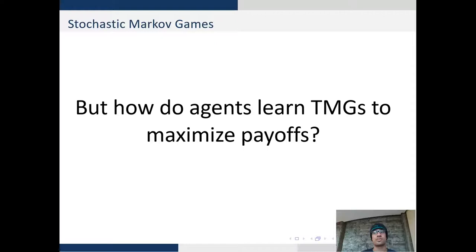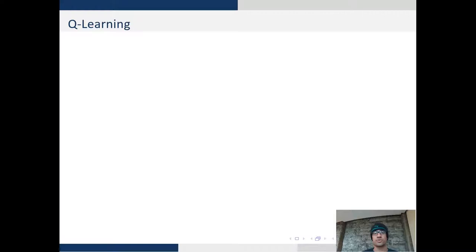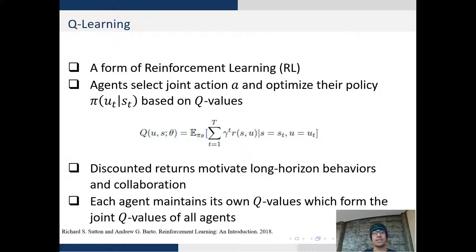But the question arises, how can agents learn TMGs to maximize their payoffs? We start with Q-learning which is probably one of the most famous algorithms in reinforcement learning.